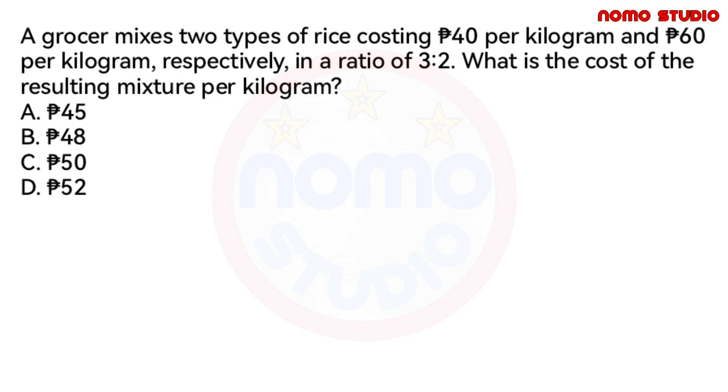So now, let's answer this. Sabi sa problem, the first type of rice costs 40 pesos per kilogram and the second type of rice costs 60 pesos per kilogram. And these two types of rice are mixed in a ratio of 3 is to 2.